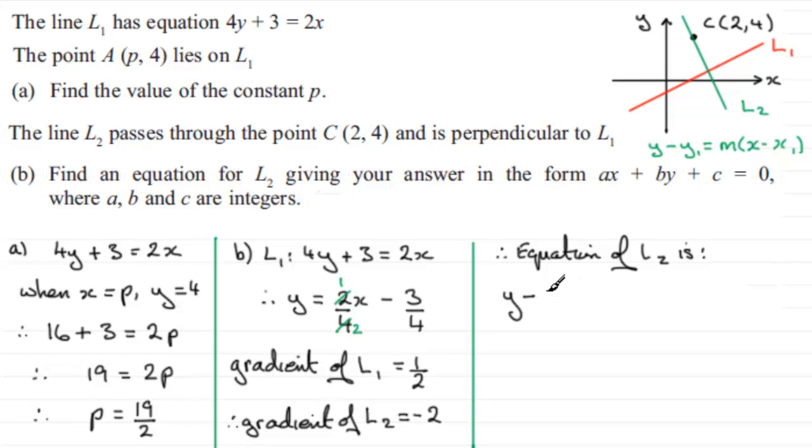Y1 is the 4 equals M, the gradient, which we've just seen is minus 2. And that's multiplied by X minus X1. X1 is 2. And if we just expand the bracket here, we therefore have Y minus 4 equals minus 2X plus 4.